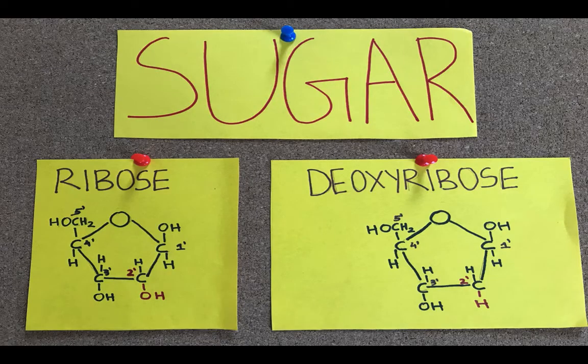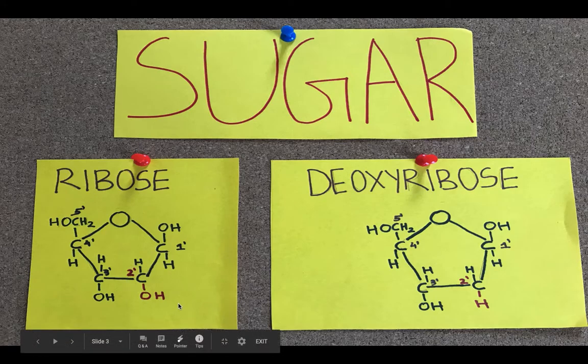The ribosugar is found in RNA or ribonucleic acid and has a hydroxy group on the 2' carbon.